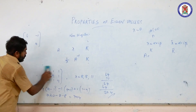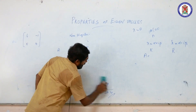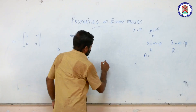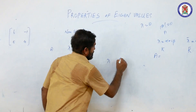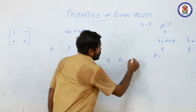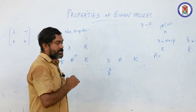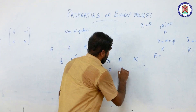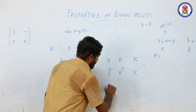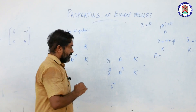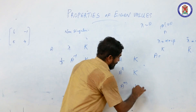This property can also be extended: if lambda is an eigenvalue of a square matrix A with eigenvector K, then lambda squared is an eigenvalue of A squared with the same eigenvector K. More generally, lambda raised to M is an eigenvalue of A raised to M with the corresponding eigenvector K.